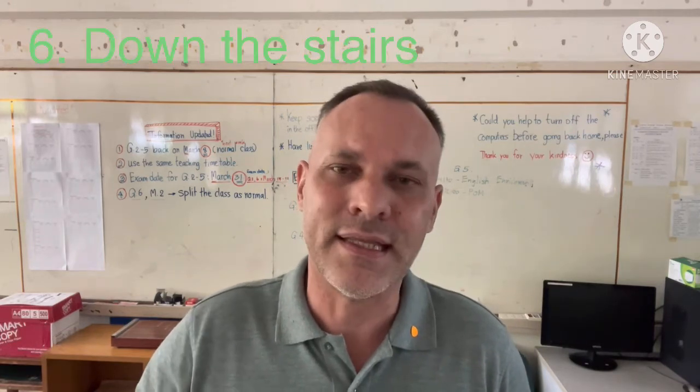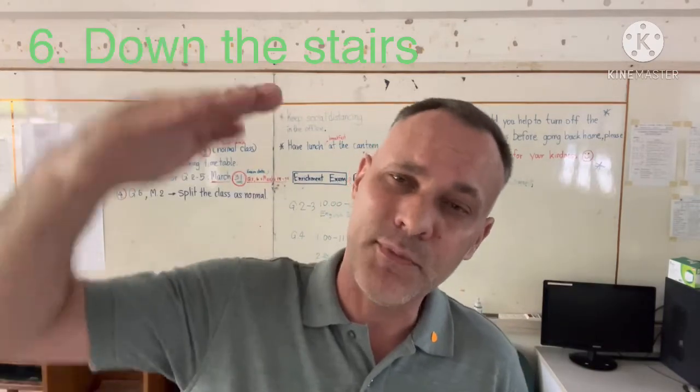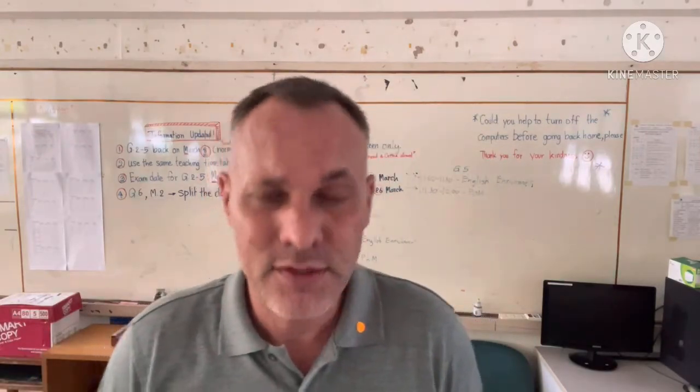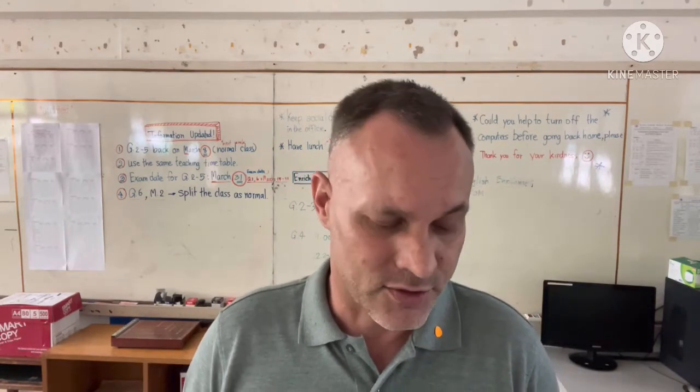And finally number six is 'down the stairs' — you walk down the stairs. Let's review and recap the vocabulary words: number one, up the street; number two, over the bridge; number three, under the train tracks; number four, around the fountain; number five, along the river; number six, down the stairs. Those are the six vocabulary words or phrases we're going to be using — that's section A.